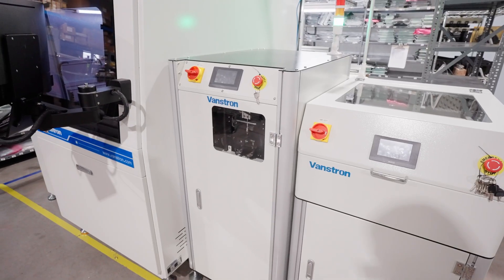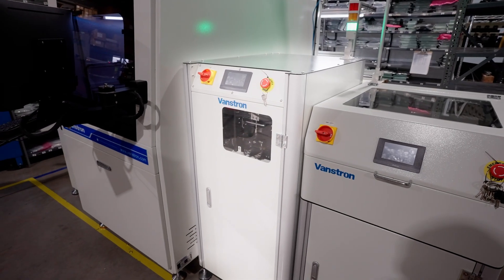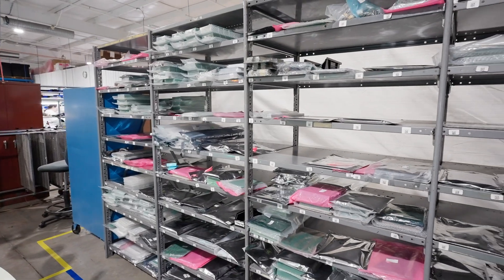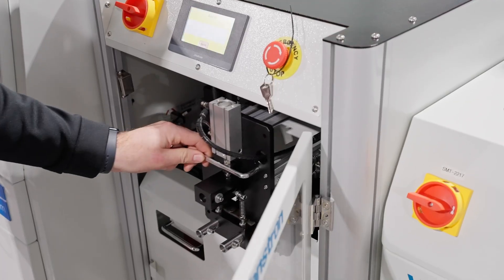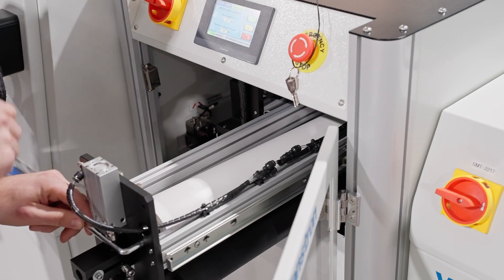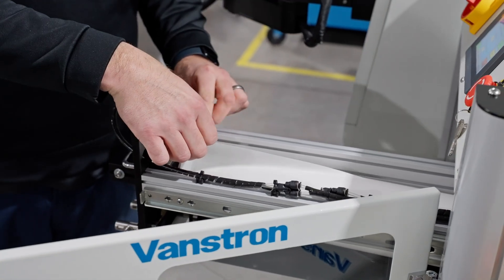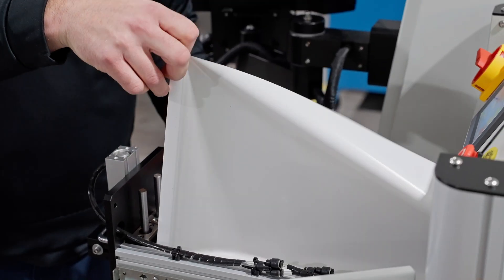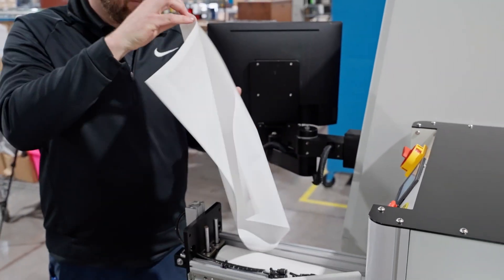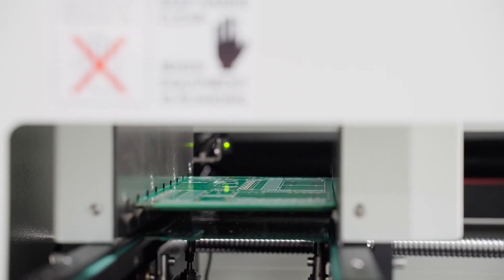After laser marking, the board is conveyed to a board cleaner. That's important because circuit boards are made of materials such as fiberglass, which produce dust during the bare board manufacturing process. Cleaning also removes any other foreign object debris, which can affect solderability. Once a board is cleaned, it's conveyed to a board stacker.